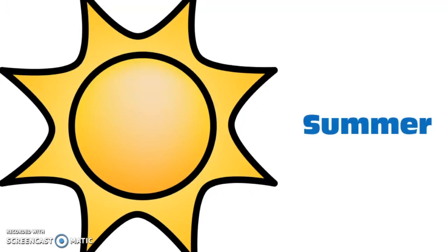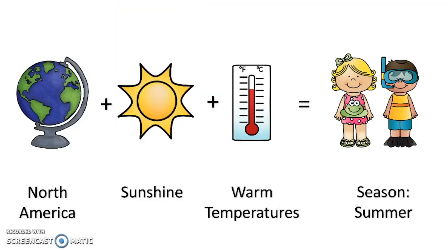The first kind of weather that we're going to talk about happens in the summer. We live in North America and when it is summertime, which is the first season that we're going to learn about. For the most part, the sun is warm, there's very few clouds, and the skies are blue.